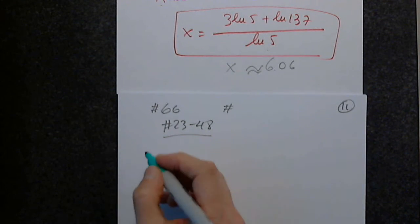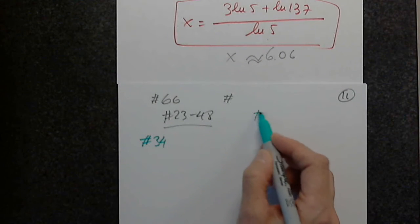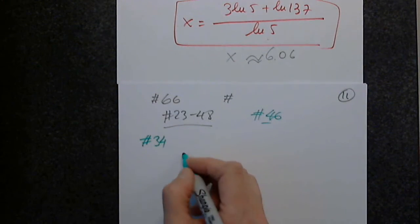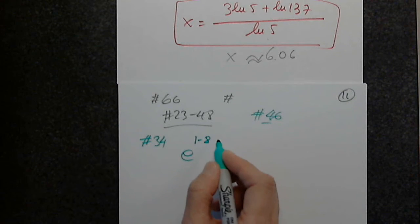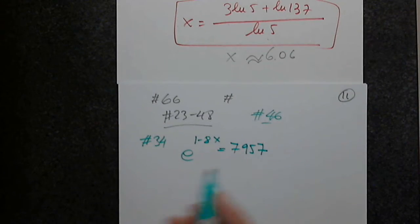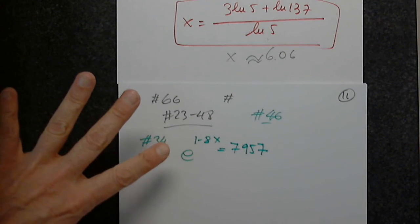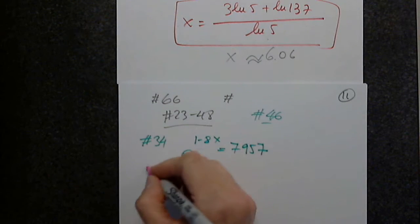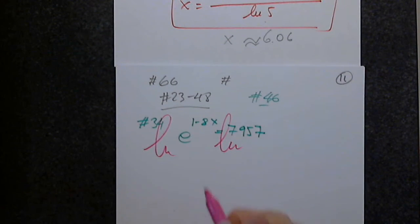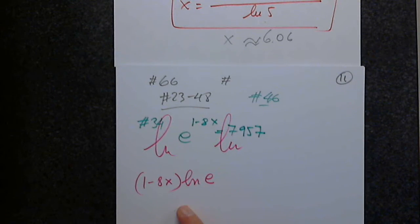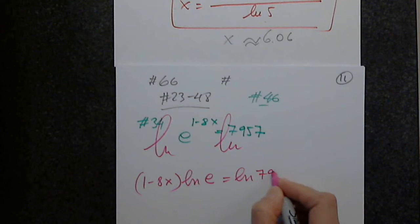Let's continue with 34: e raised to one minus eight x equals 7957. The left-hand side is base e, and there is no way I can present both sides with the same base. So the next step is to apply natural log to both sides. Remember — the power becomes a factor in front. If you forget parentheses, you'll only be multiplying by eight x instead of making one minus eight x a factor. So one minus eight x times natural log e equals natural log 7957.